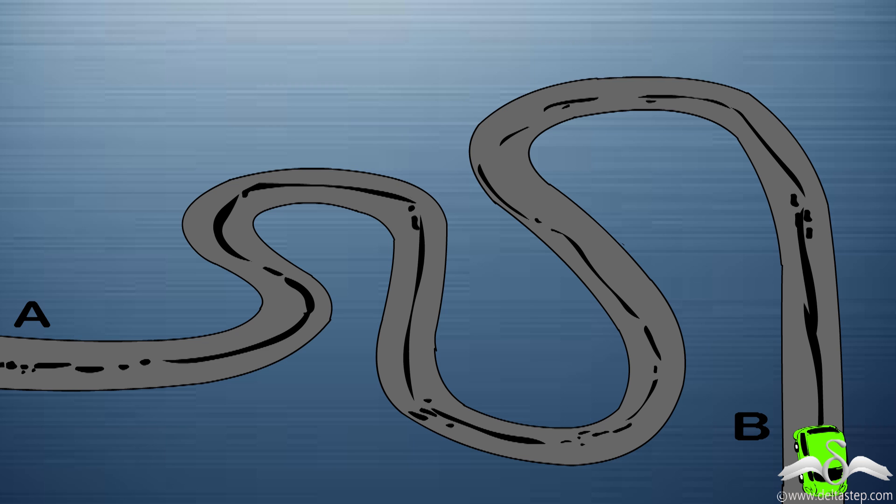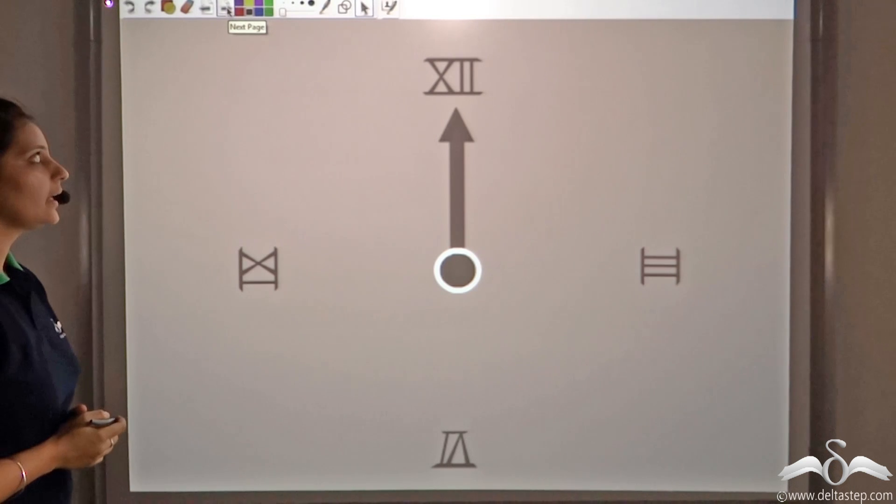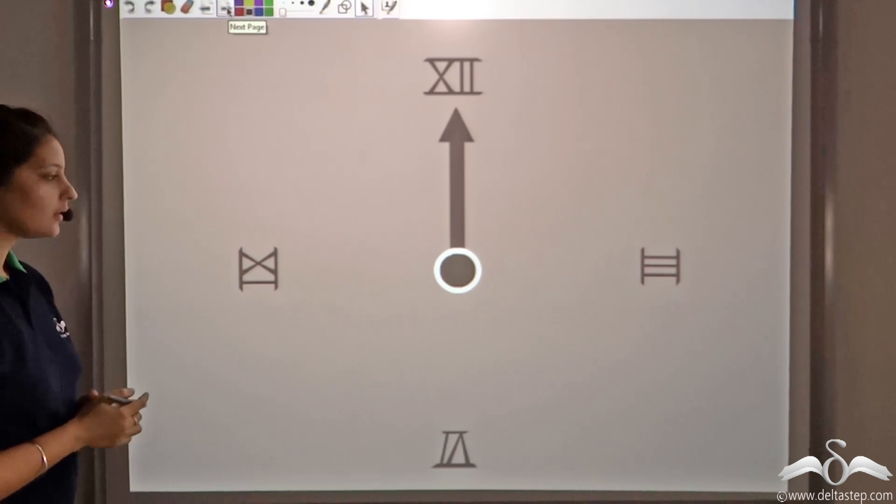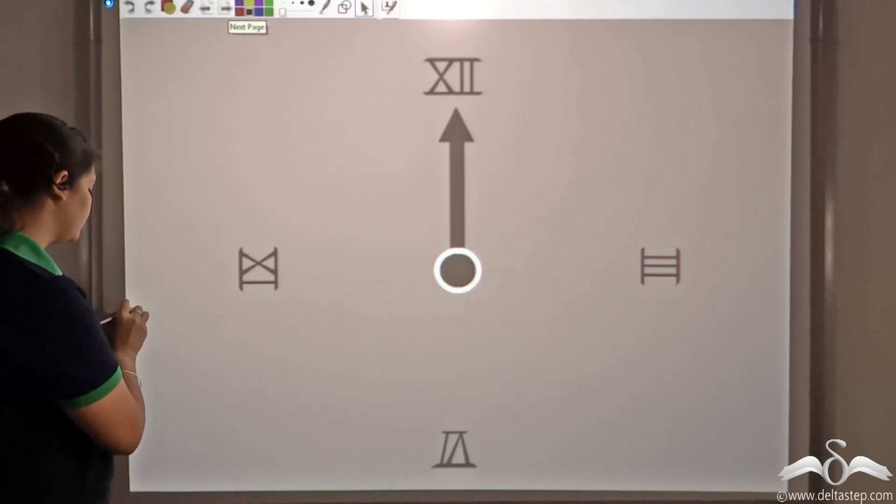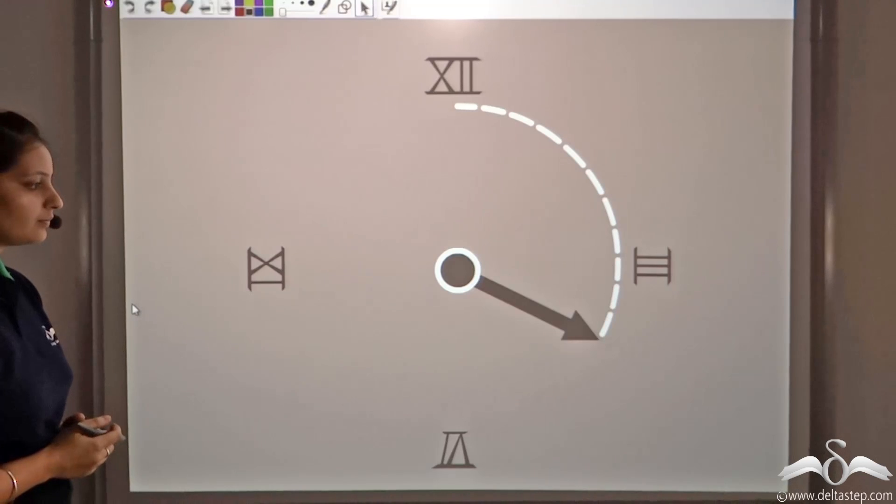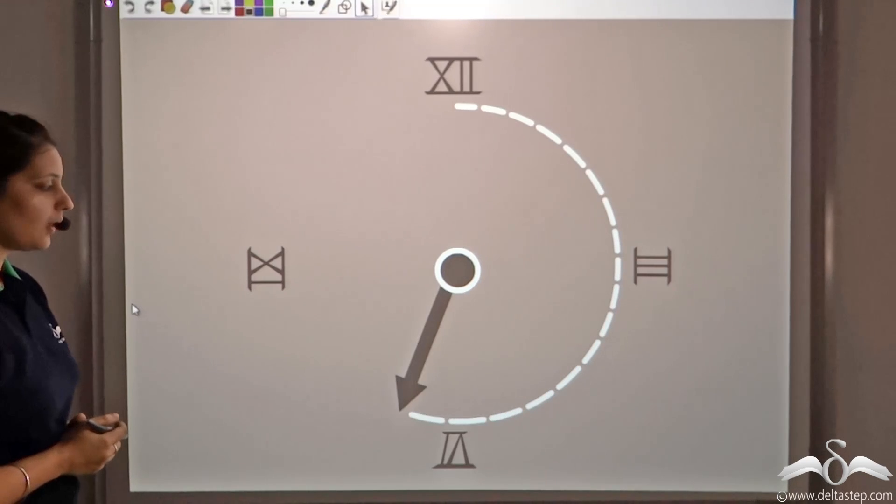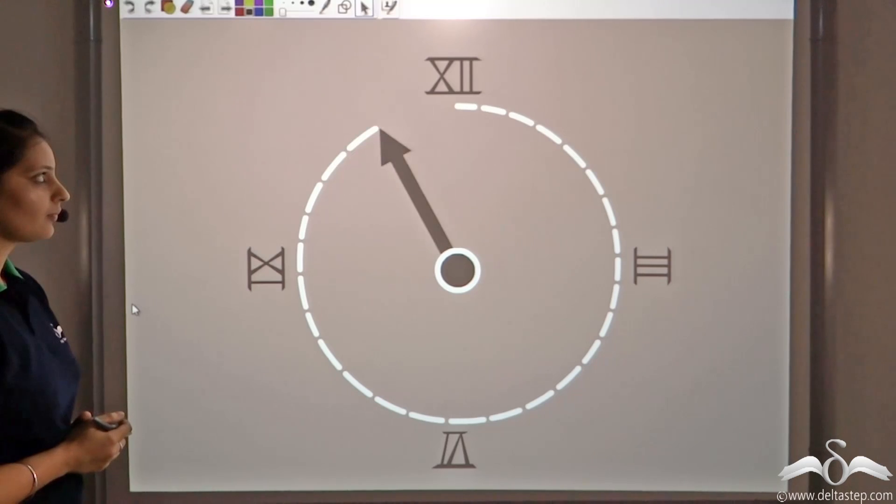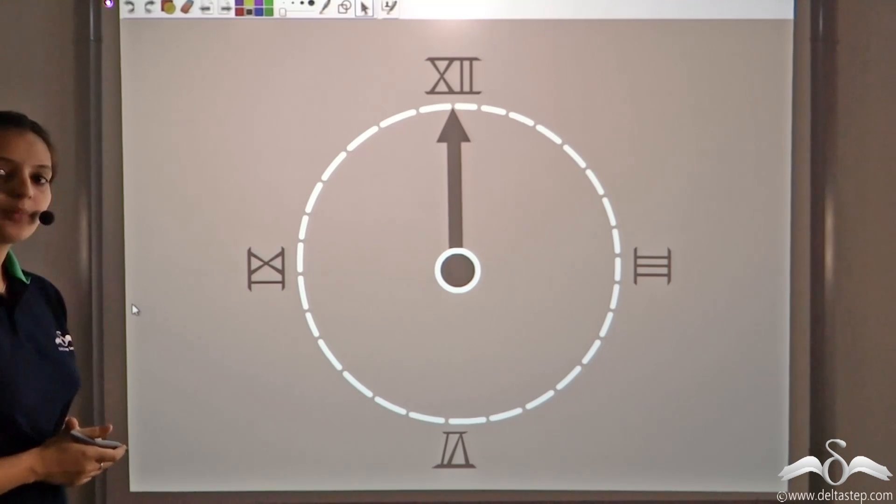So this oil dash is nothing but the locus of that moving path. Now let us observe this watch. Look at the minute hand. Observe its path. Doesn't this shape look familiar?